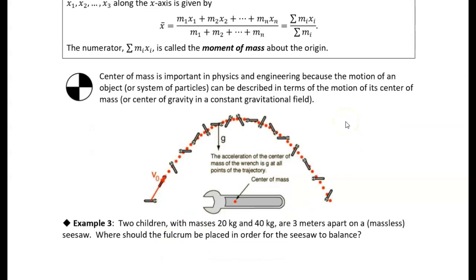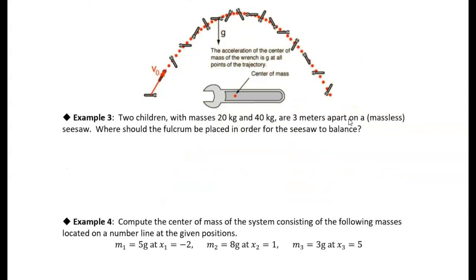The center of mass is very important in physics and engineering because it's the point where we can consider all gravitational forces to be acting. For example, if you throw a wrench, it will rotate and spin in three-dimensional space, but the center of mass will follow the parabolic trajectory you would expect from projectile motion.